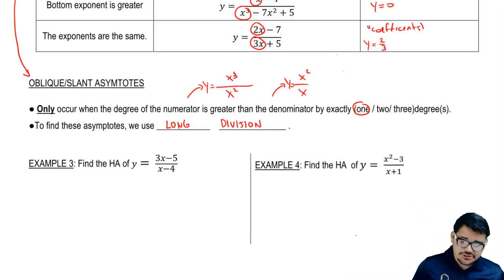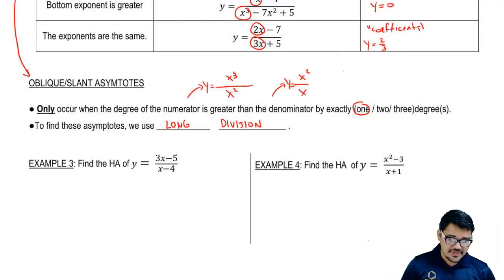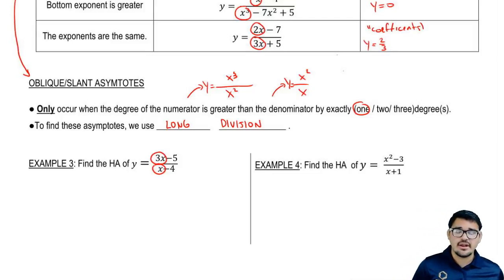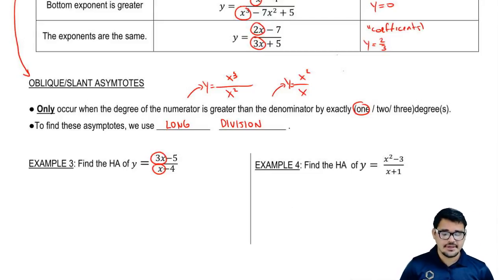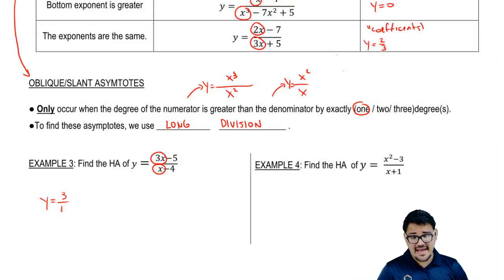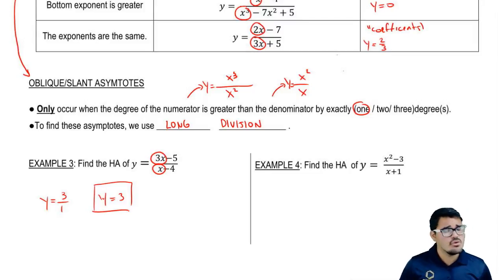Let's look at example 3: 3x minus 5 over x minus 4. We look at the exponents — on top we have just 3x, on the bottom just x. The exponents are the same. Whenever the exponents are the same, all we care about is the coefficients. The coefficient on top is 3, the coefficient on the bottom is 1, so it's 3 over 1. The asymptote is y equals 3. All you do is identify which exponent is bigger, apply the rule, and here it's just the coefficients: y equals 3.